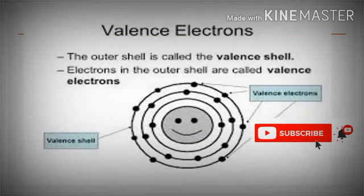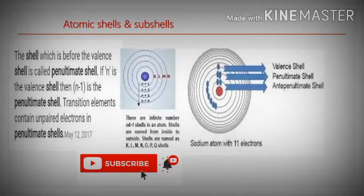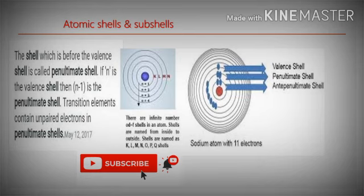In the atom, the outer shell is called the valency shell. The electrons which are present in the outer shell are called valency electrons. See the diagram — here you can easily observe valency electrons and valency shells. The shell before the valency shell is called the penultimate shell, denoted as N-1. These penultimate shells and anti-penultimate shells are also called inert shells. This is most important to understand the shielding effect.